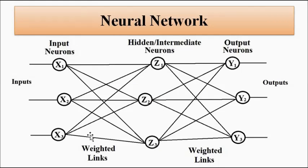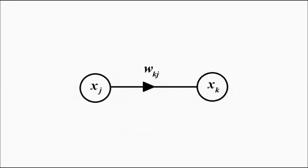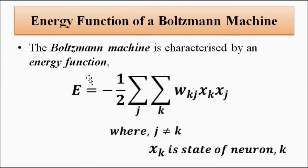If we pick any two layers — say the input layer and the hidden layer — the energy function is the summation of weights and the states of all neurons in those two layers. Similarly, for the hidden layer and output layer, it applies to all neurons and synaptic weights in those layers. The energy function concerns two layers of neurons in a Boltzmann machine.